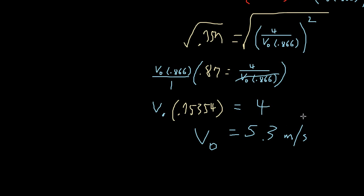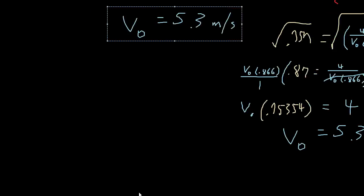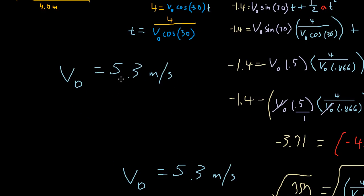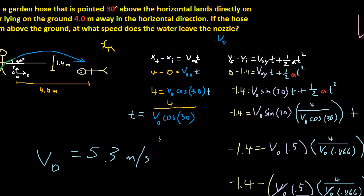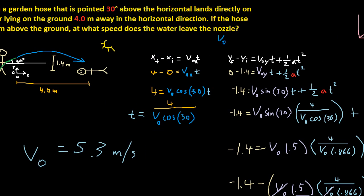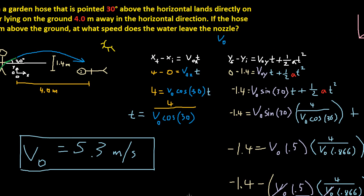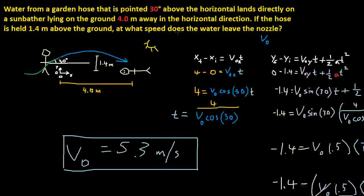We're going to take this answer and bring it up to where we began. To answer the question: at what speed does the water leave the nozzle? If you want to hit a target 4.0 meters away from a height of 1.4 meters at a 30 degree angle, it would have to leave at 5.3 meters per second.